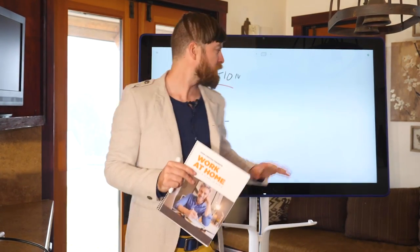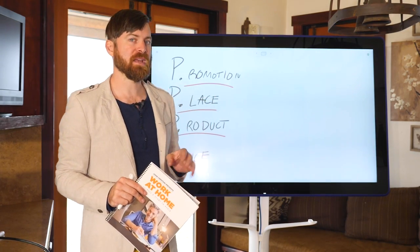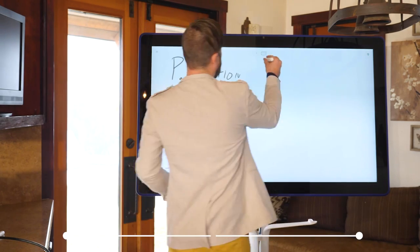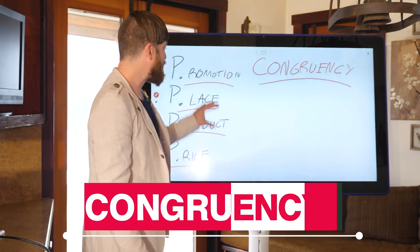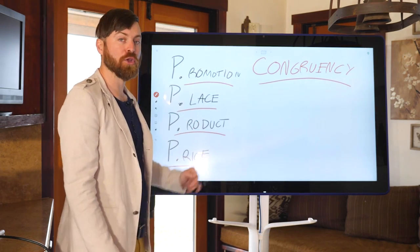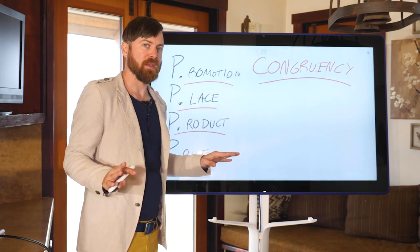We're going to use my book in the example I'm going to put up here. But the most important concept that we're going to have to understand here is what I call congruency. If every one of the P's does not line up, if things are not congruent throughout the entire P's, then you won't make money.